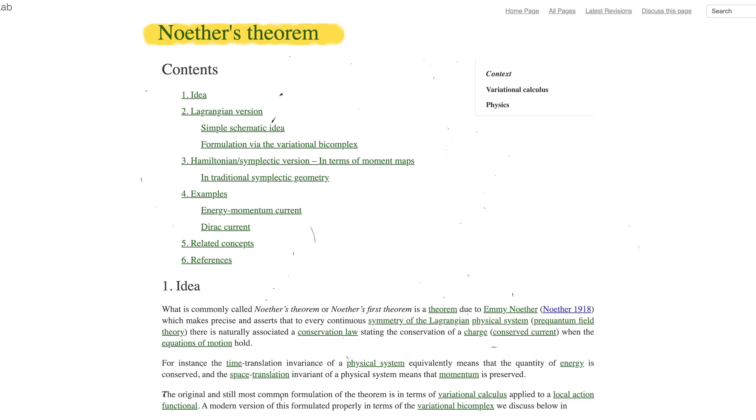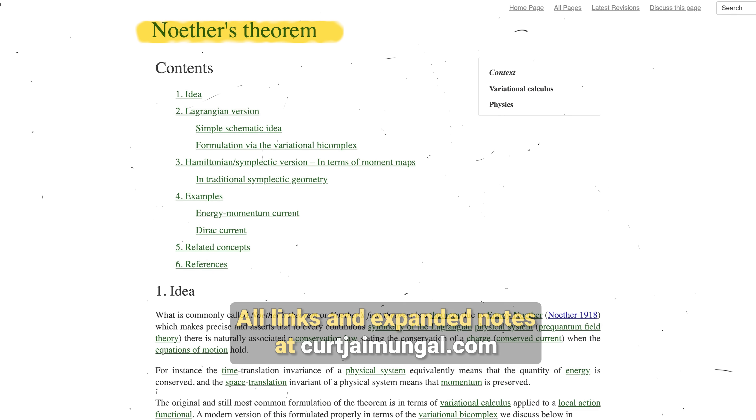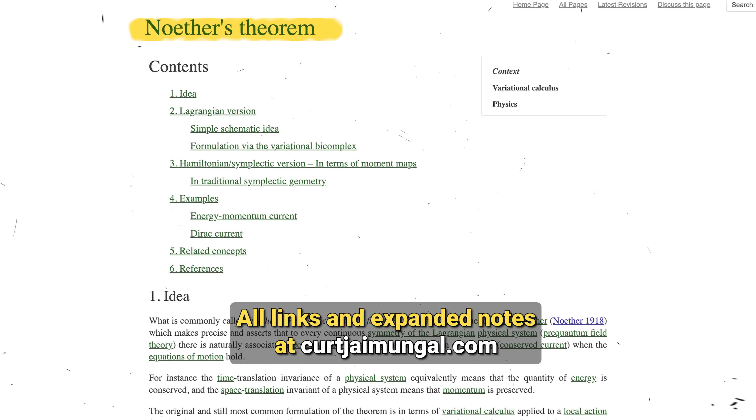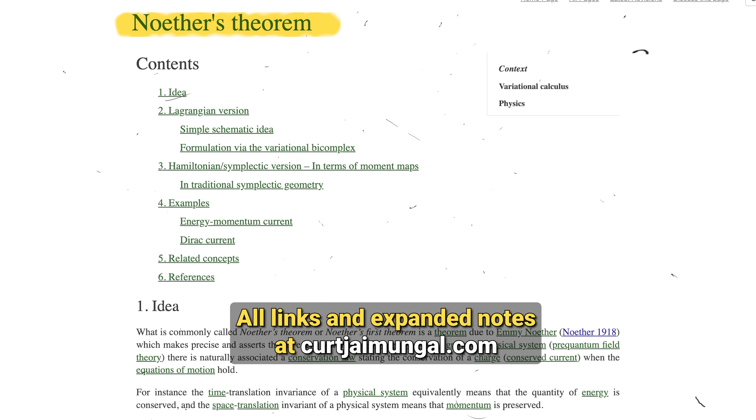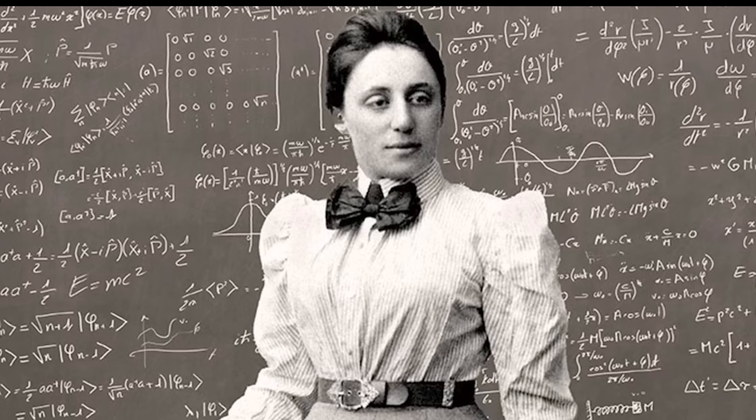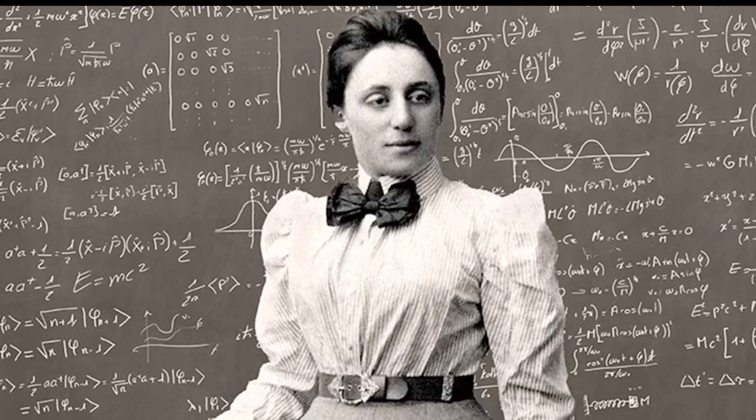Then we have Noether's theorem, which links certain symmetries to conservation laws under some variational principles. For instance, you may have learned that spatial symmetry gives momentum conservation, and time symmetry gives energy conservation. It's all beautiful. Noether's theorem is said to explain conserved quantities.